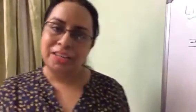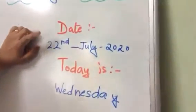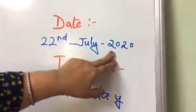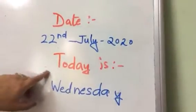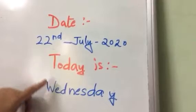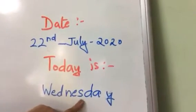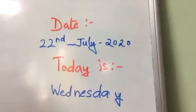Stay in the house. Keep washing your hands. Now, first tell me what is the date today? 22nd July 2020. And what day is today? Wednesday. W-E-D-N-E-S-D-A-Y. Wednesday.